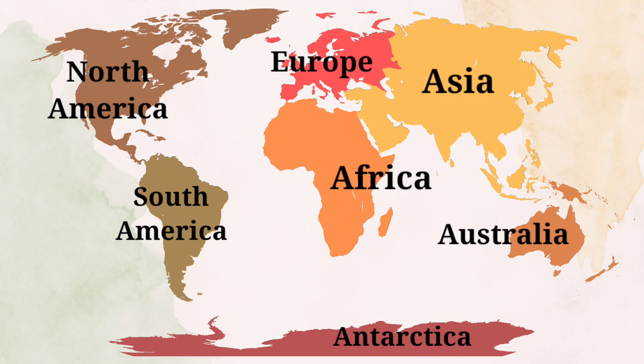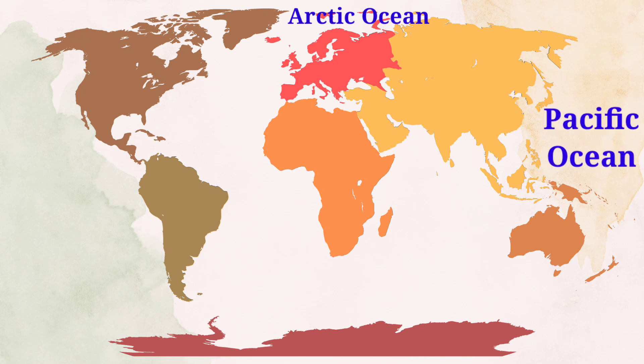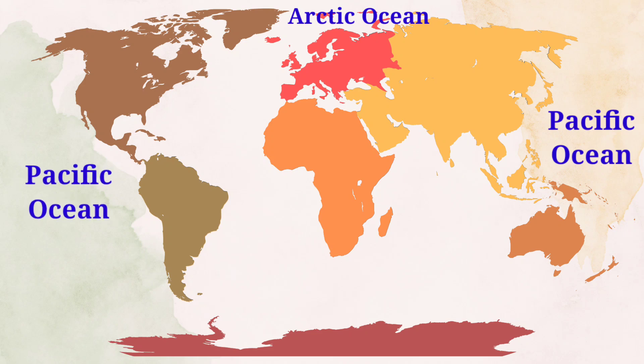Antarctica — Antarctica is the fifth largest continent in the world. These are the seven continents: Asia, Africa, Europe, Australia, North America, South America, and Antarctica. Now let's see the five oceans. Arctic Ocean. Pacific Ocean — the Pacific Ocean is the deepest ocean in the world.